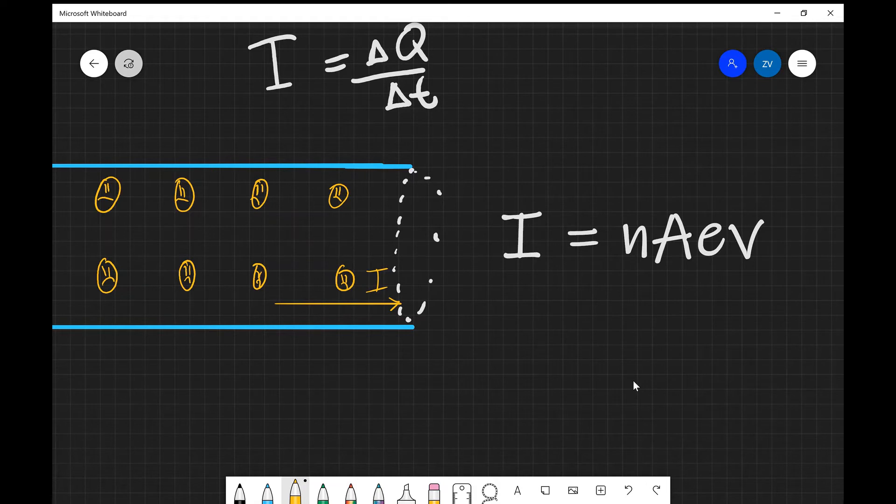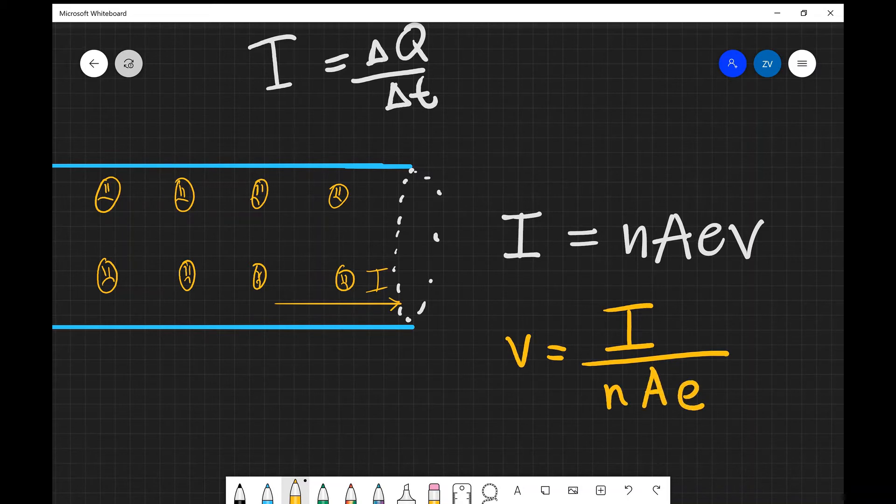Notice something really interesting as well is that we can rearrange this equation directly for the drift velocity. Let's do that right now. So in this case the drift velocity V is going to equal to I divided by nAe and this will allow us to calculate the drift velocity of those electrons along the wire. Just a note this velocity is actually very tiny so we're expecting the speeds to be very small.